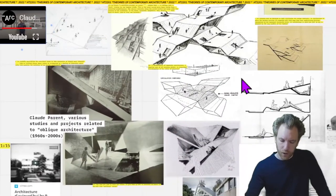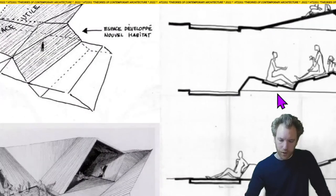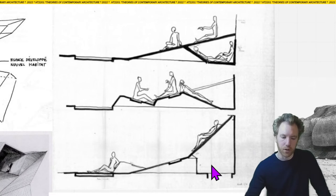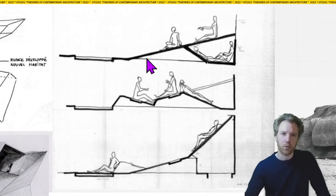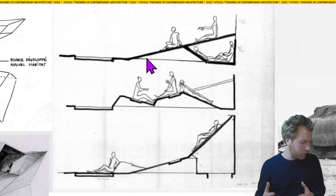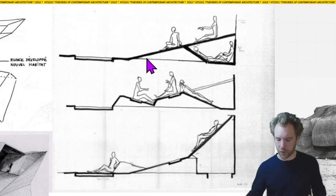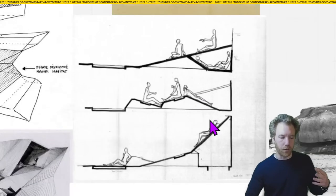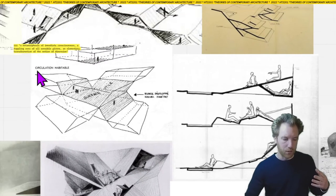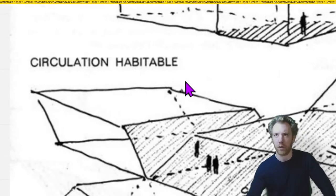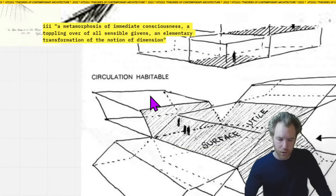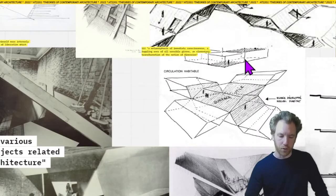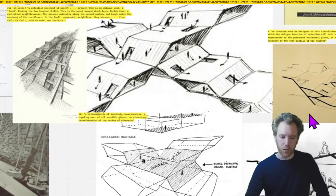Parent had a particular interest in the domestic. His sketches for furniture show how for him the distinction between furniture and architecture basically dissolved — it was all what he called 'circulation habitable': habitable circulation. The whole of architecture should be for circulation, for moving around, and it should also be habitable — you should be able to live on it.